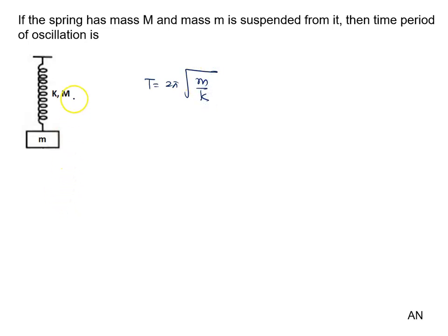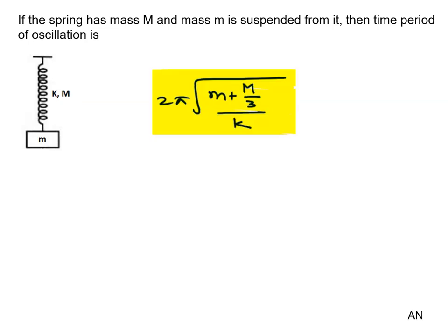When the spring has a given mass, we count an effective mass of m/3 for the spring. So the answer is 2π√((m + m/3)/k).